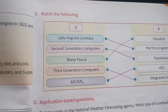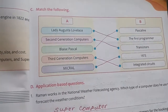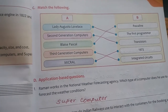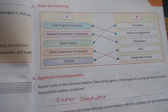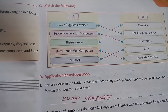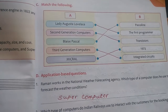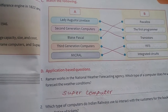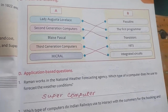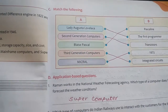Now, matching test. Lady Augusta Lovelace was the first programmer. The second-generation computer used transistors. Blaise Pascal's invention was the Pascaline. The third-generation computer used integrated circuits. And the microchip was invented in 1973. These are the matching test answers.